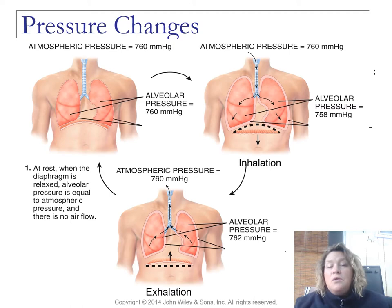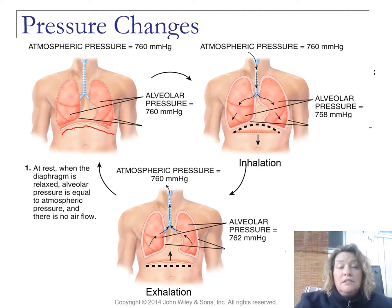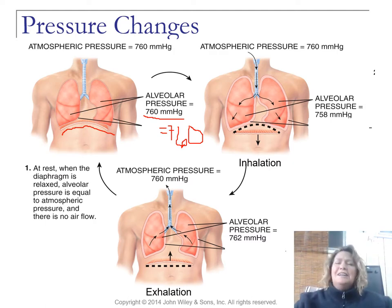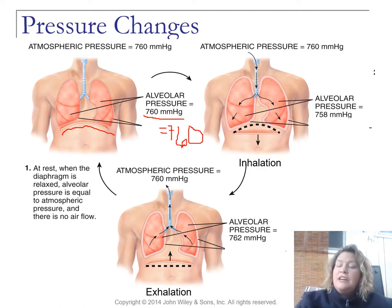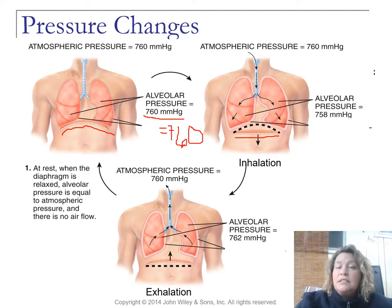At rest, the diaphragm is relaxed in its dome shape. The alveolar pressure is equal to atmospheric pressure — 760 millimeters of mercury. During inhalation, there is a change in alveolar pressure brought about by the diaphragm contracting and flattening, which increases the thoracic cavity space and allows for a decrease in pressure.